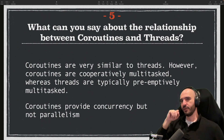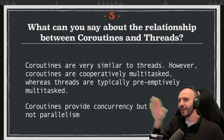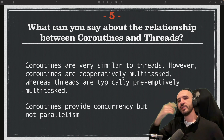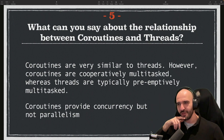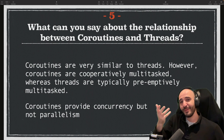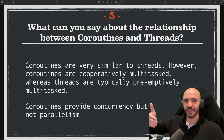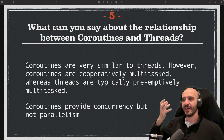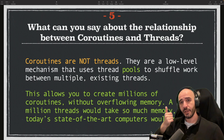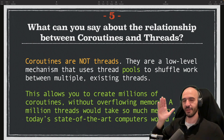One answer you might find is: coroutines are very similar to threads, however coroutines are cooperatively multitasked whereas threads are typically preemptively multitasked. Do not answer this — it's straight from Wikipedia. If you say this, someone will ask 'what do you mean by preemptively multitasked?' and you'll be embarrassed. Don't parrot words you don't understand. Try to understand things in a simpler way.